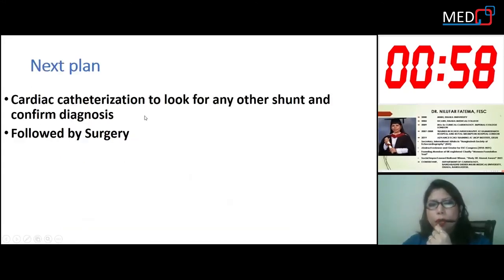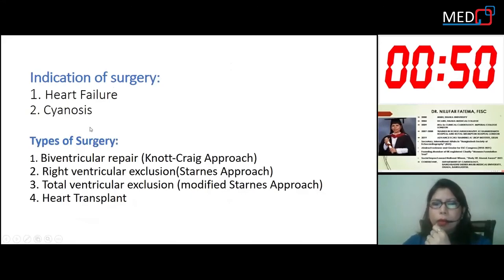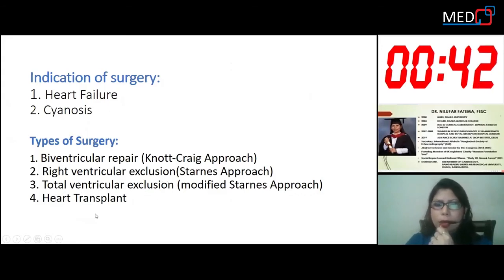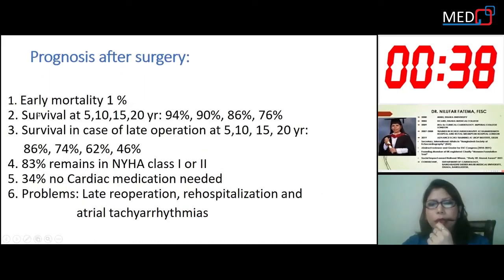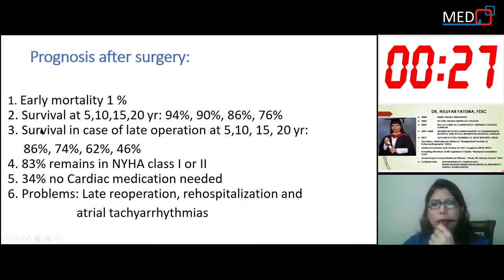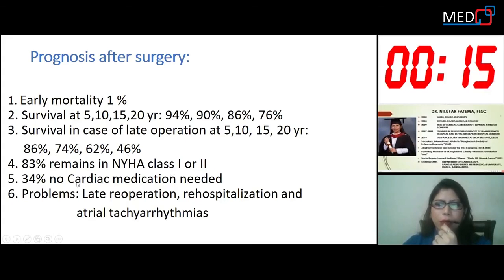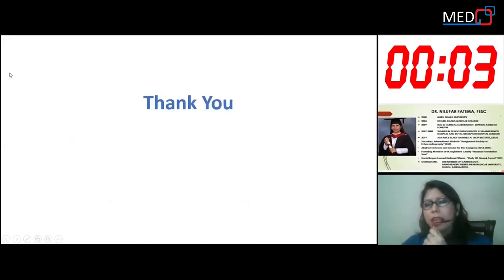The next step will be cardiac catheterization to look for any other shunts and confirm the diagnosis, followed by surgery. Indications for surgery include heart failure symptoms. Types of surgery include biventricular repair, right ventricular exclusion, total cavopulmonary connection, and ultimately heart transplantation. Early mortality after surgery is approximately 1%. Survival is good at 76% if surgery is done in due time, but drops to 46% at 20 years if done late. 83% may remain in NYHA class I–II, and 34% have no need for cardiac medication. Problems include late re-operation, re-hospitalization, and ongoing cardiac care.